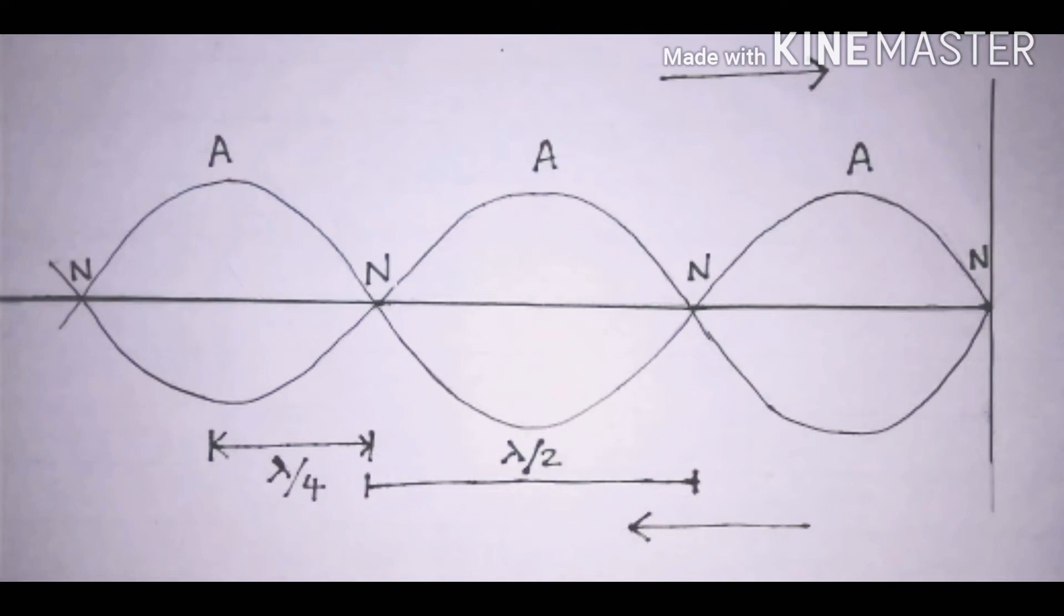A stationary wave basically comprises of nodes and antinodes. Now let's see what are antinodes. Antinodes are the points where the vibration of particle is with maximum amplitude. That is, the amplitude is maximum at the antinode and it is minimum at the nodes. So displacement at antinodes is maximum.